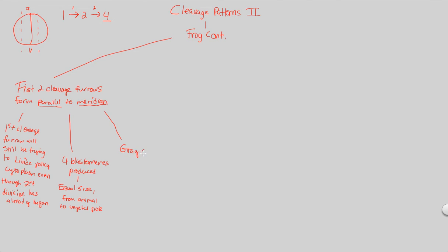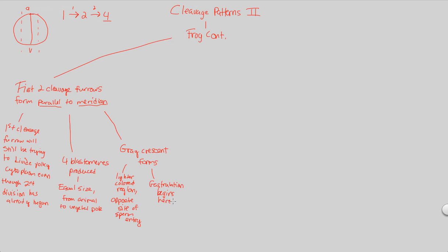After this, we form something called the gray crescent. The gray crescent is a lighter-colored region of this developing embryo, and it's found on the opposite side of sperm entry. This structure forms for an important reason: this is going to be where gastrulation begins. Gastrulation is that pushing-in of the embryo to form the gastrula cavity — something we'll talk about more in development, but just know these specific events happen.